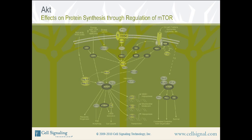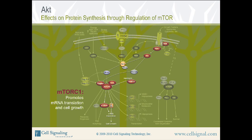AKT promotes protein synthesis by acting as a major regulator of mTOR. The mammalian target of rapamycin, mTOR, is a serine-threonine protein kinase present in two distinct complexes. mTORC1, which consists of mTOR, RAPTOR, and GβL (also called MLST8), is inhibited by rapamycin and functions to promote mRNA translation, transcription, and cell growth when energy conditions are favorable. AKT signaling activates mTORC1 and thus promotes protein synthesis through inhibition of TSC2 and PRAS40, both of which down-regulate mTOR activity.